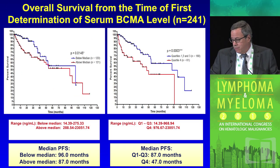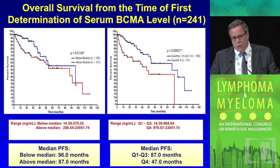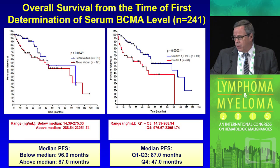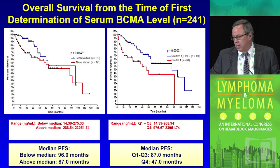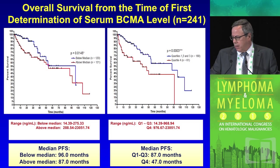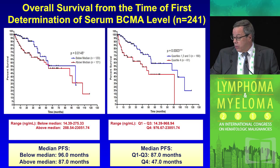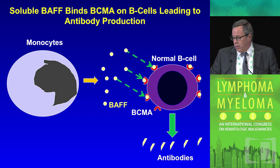BCMA is also significant for overall survival. In 241 patients broken down by median, there is a marked difference. Most dramatically, in the highest 25% the median overall survival is 47 months, whereas in the lowest three quartiles the median is 87 months.